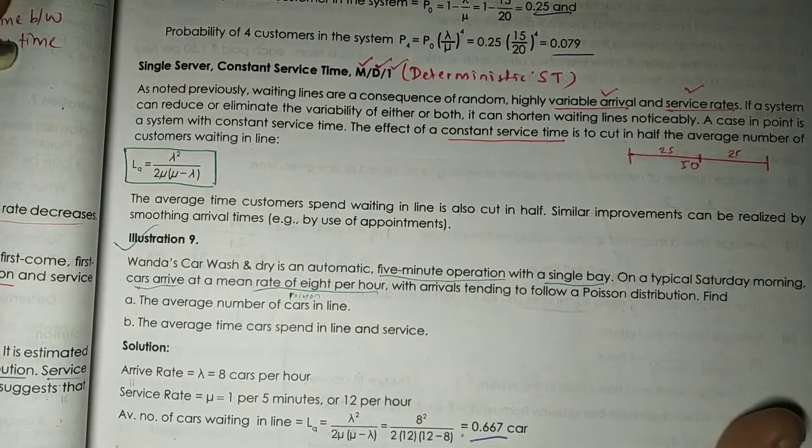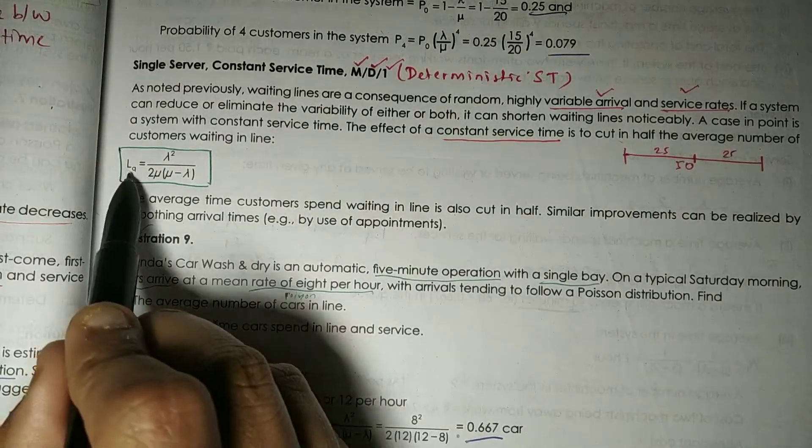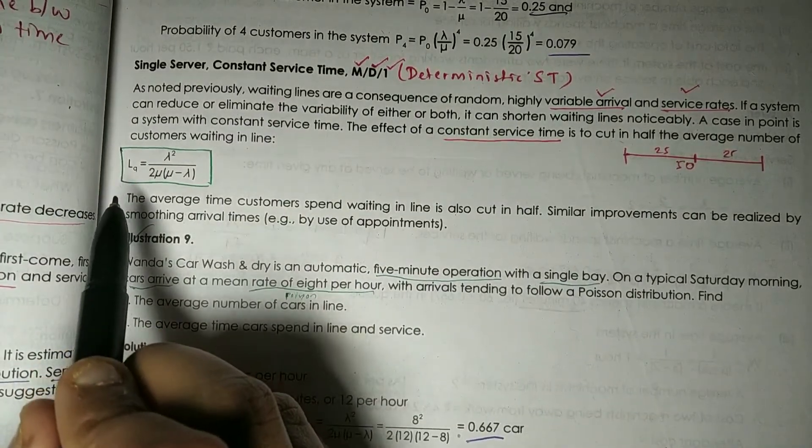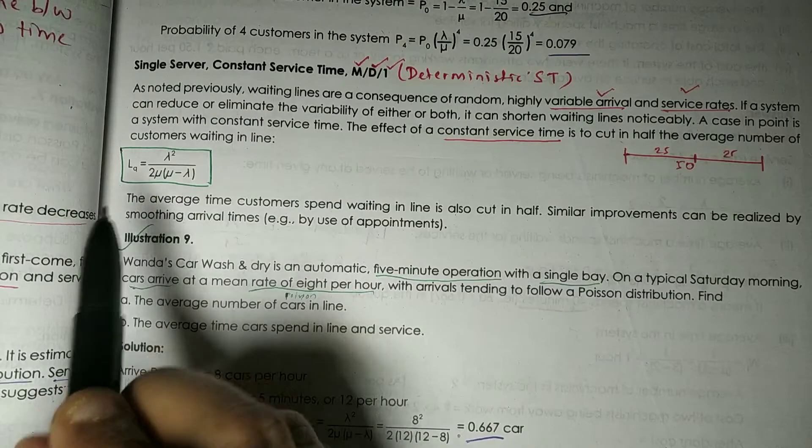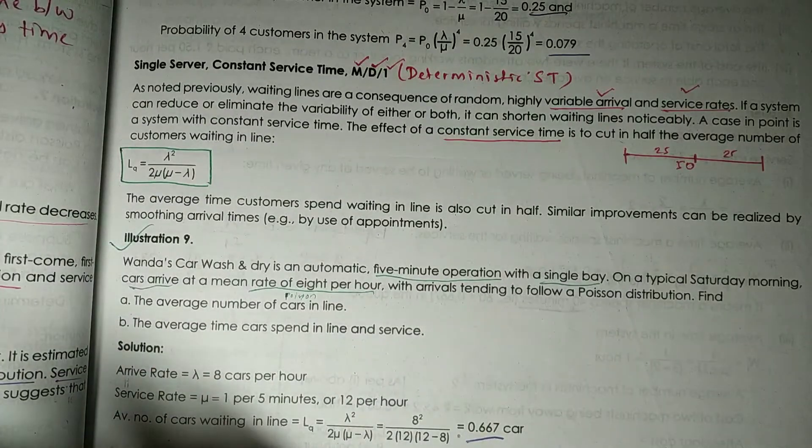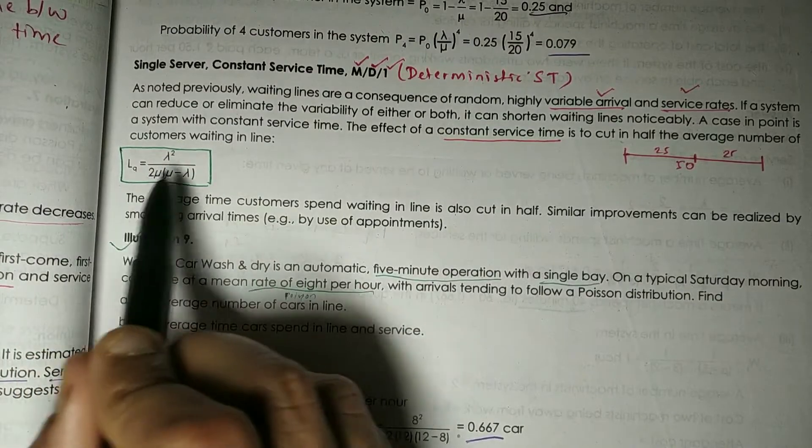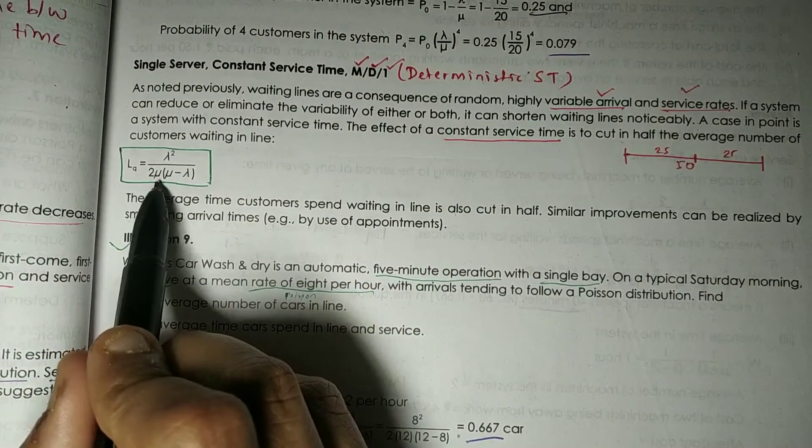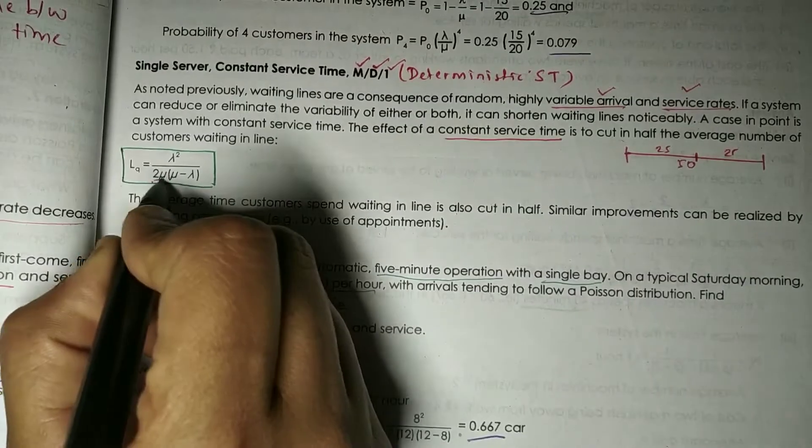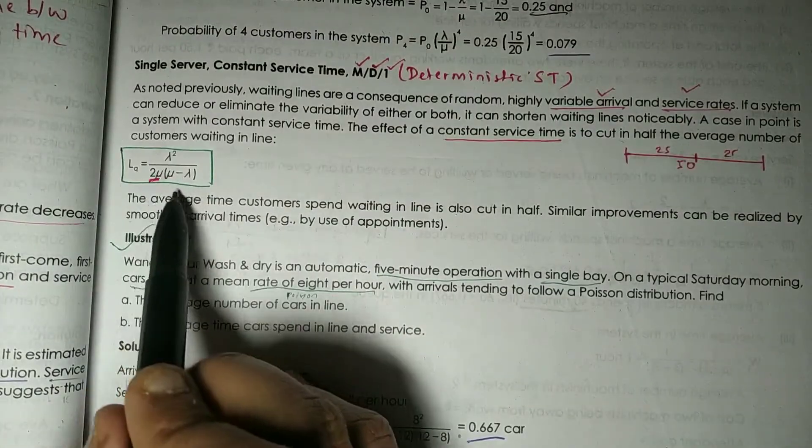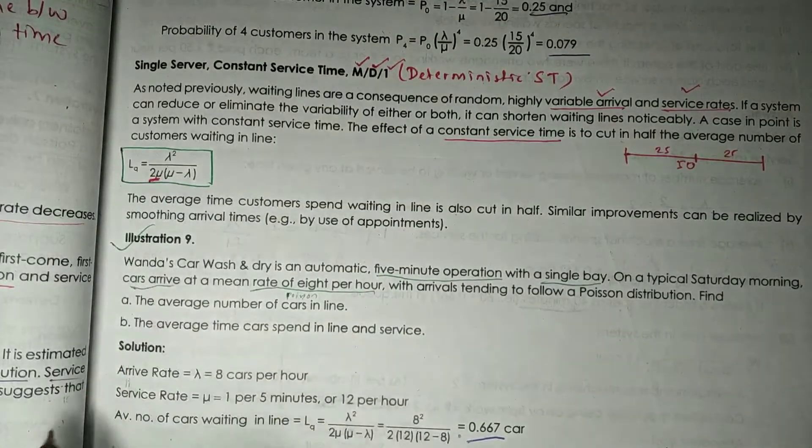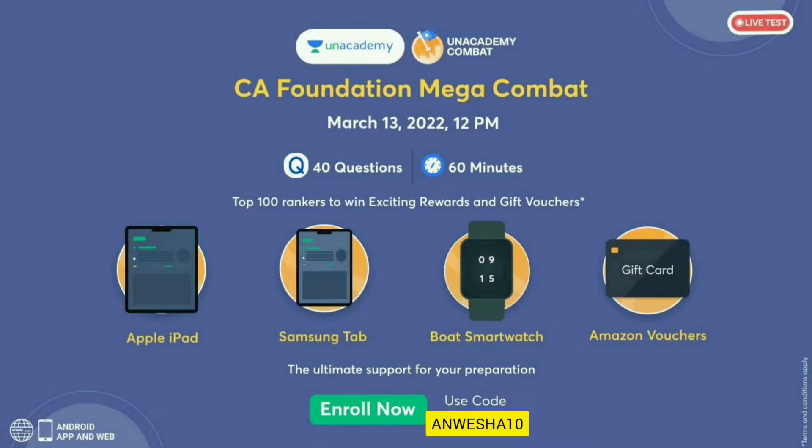So what is the formula for that? The formula is Lq, obviously we know what is the meaning of Lq—average number of customers waiting in the line. Lq equals to lambda squared by 2 mu, this is important, 2 mu into mu minus lambda.